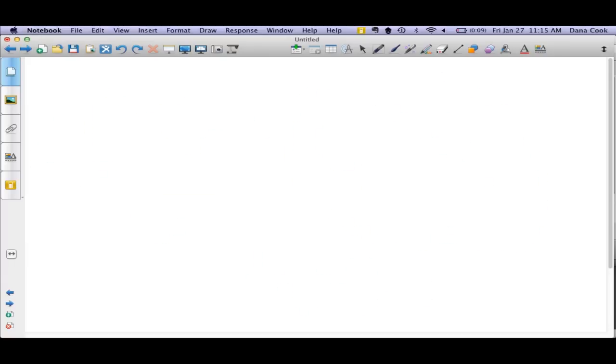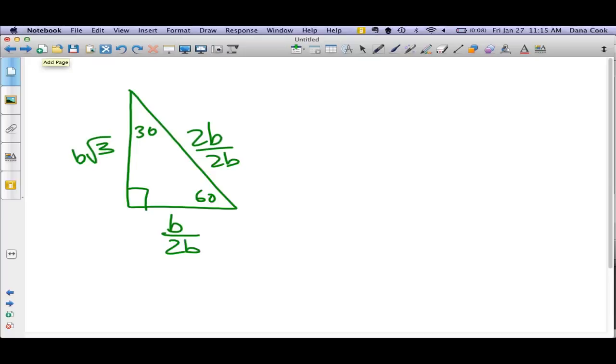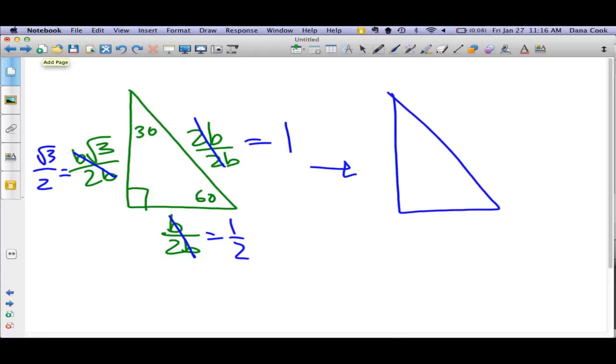If we do the same process with this guy, 30, 60, 90, then we get more directly, we get 1, we get square root of 3 over 2, and we get 1 half. So again, that transformation looks like this. 1 unit circle, 1 half, the shorter leg, and the longer leg is square root of 3 over 2.